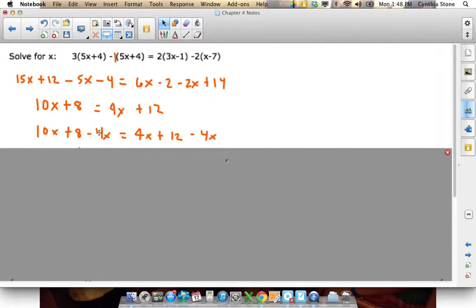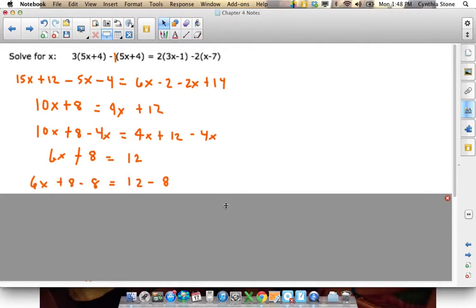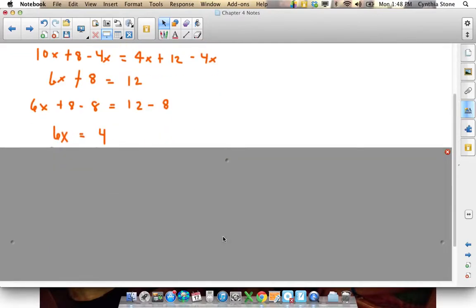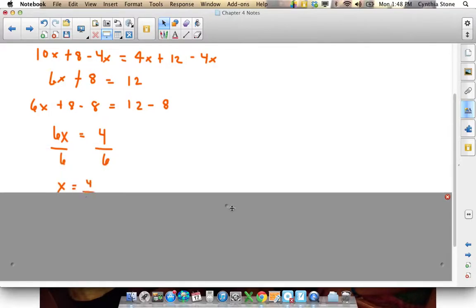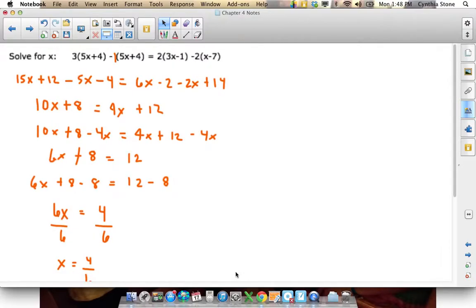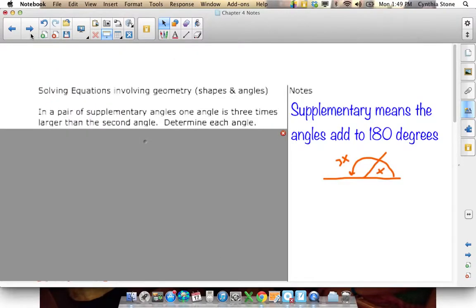So I get rid of this 4x. And you end up with 10x minus 4x is 6x plus 8 equals just 12 over here. These are gone. Now I'm going to bring this 8 to the other side by subtracting it from both sides. And you end up with 6x equals 4. And I want to get x by itself, so I have to divide both sides by 6. And you get x equals 4 over 6, or in lowest terms, x equals 2 over 3. So that's a doozy. That's a big question for sure.